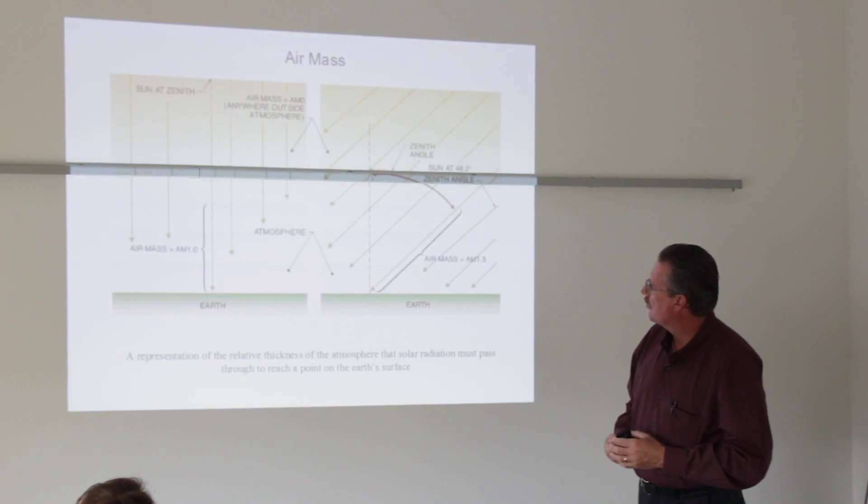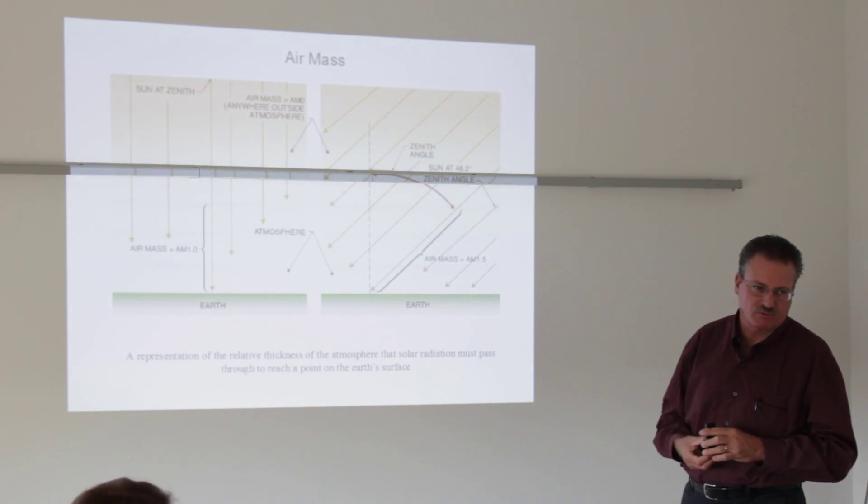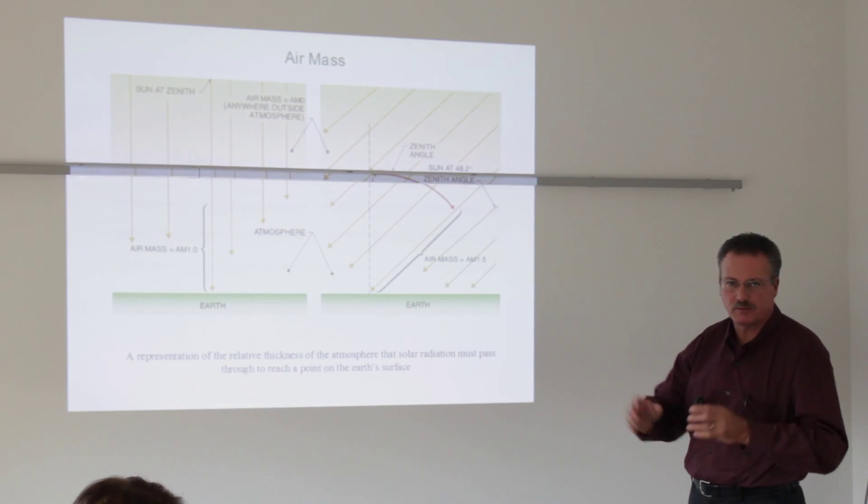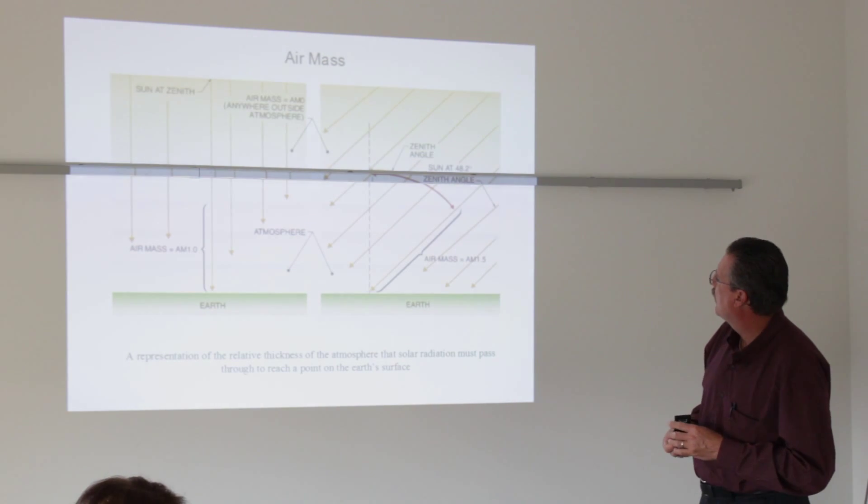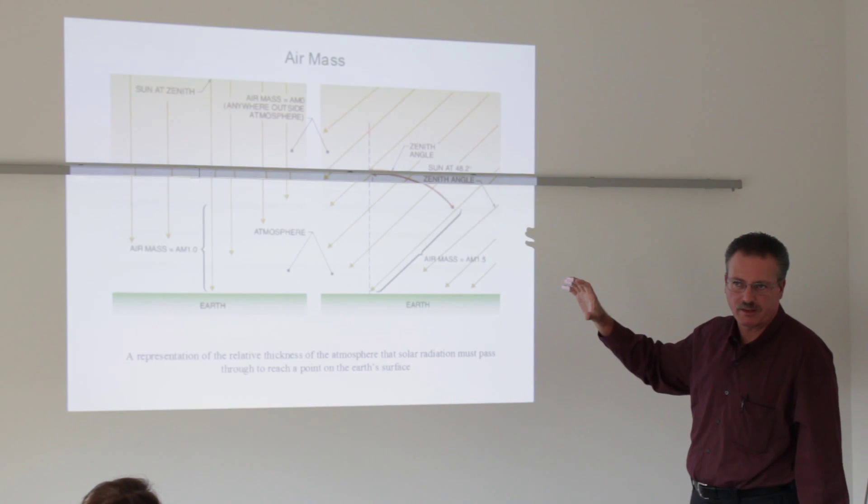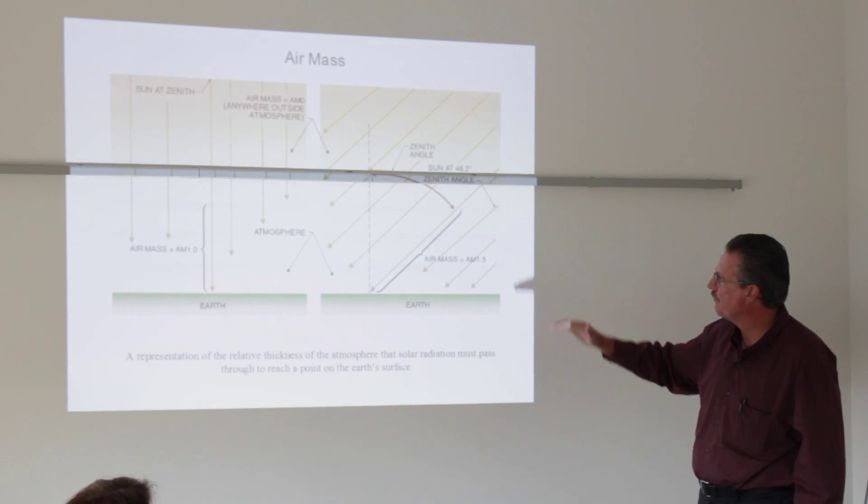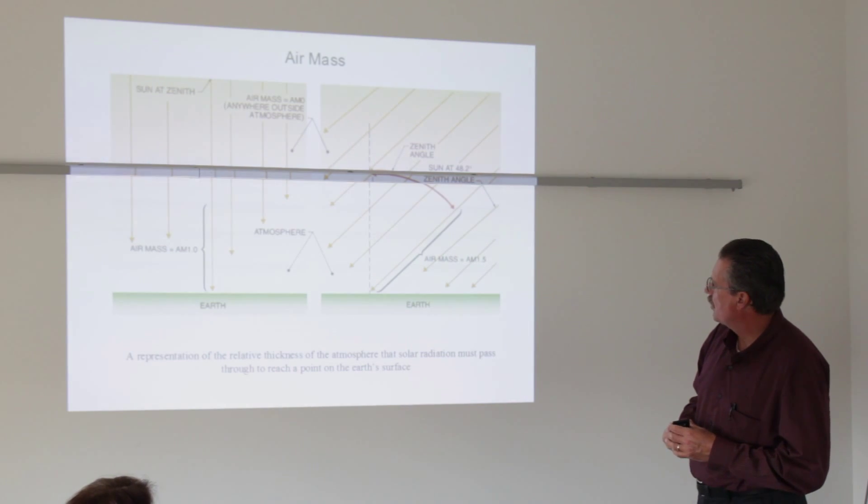Now, when we get down to the Earth, we start losing some of that energy because of the atmosphere and the air and the dust that solar radiation has to go through. And that is called air mass. And when you look at the back end of a solar panel, you will see that there are some very specific test conditions that that panel was subject to and that they have developed to give a standardized method of energy production.